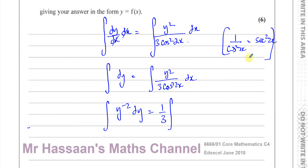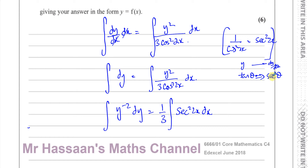The reason I want to write this as sec squared 2x is because I know that when I differentiate tan of something I get sec squared of that same thing — therefore when I integrate sec squared theta I get tan theta. So the integral of sec squared of something is tan of that same thing. That's why I've expressed this as sec squared 2x. I have one third sec squared 2x on the right, with y to the minus 2 on the left — I divided both sides by y squared.